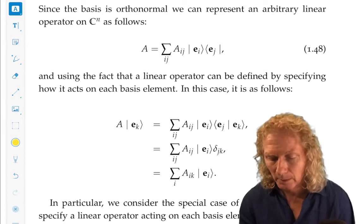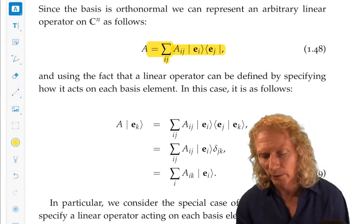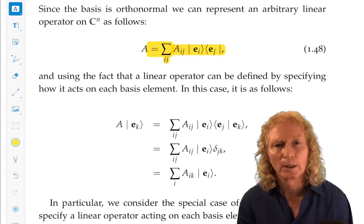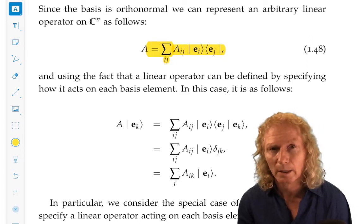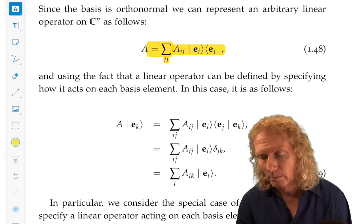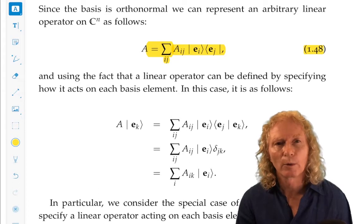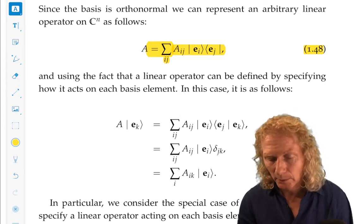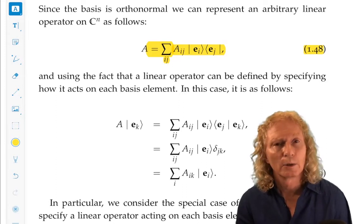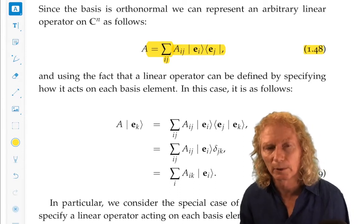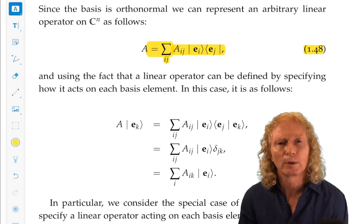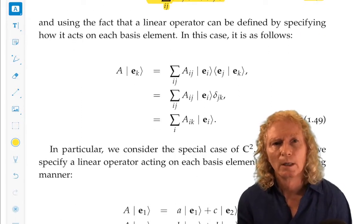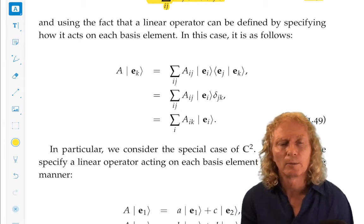We're still in C^n. We define an operator A in terms of the bra-ket combinations of the basis vectors. This is a very important expression, because this is how we're going to define operators using the bra-ket formalism, and the matrix elements of this operator are just a_ij. You can verify that by doing the calculation. How do I know that this operator is giving me what I want? An operator is defined by how it acts on basis elements.